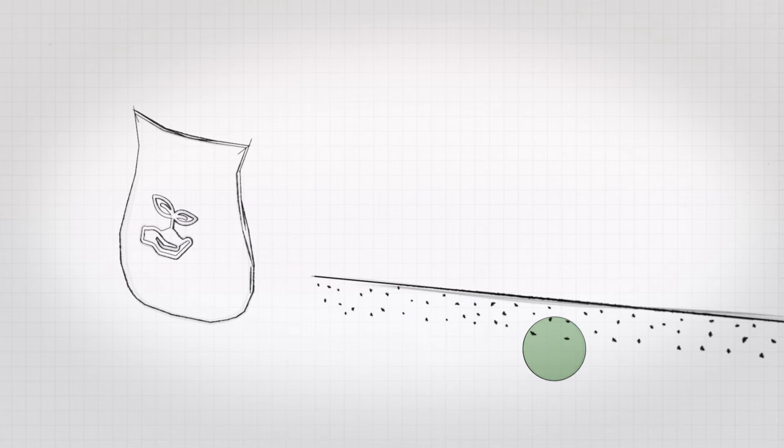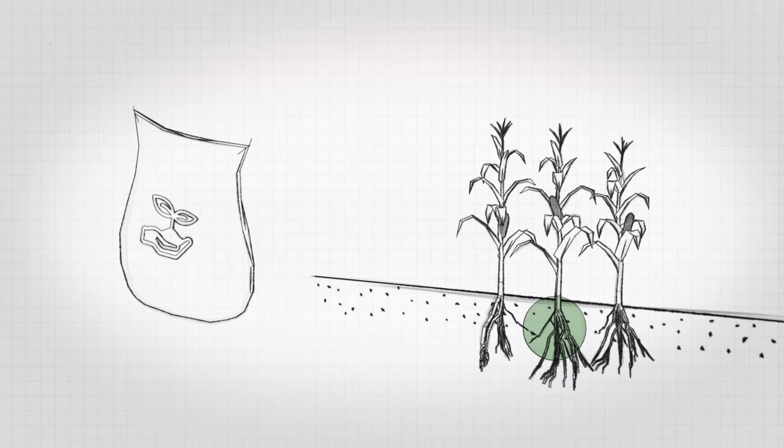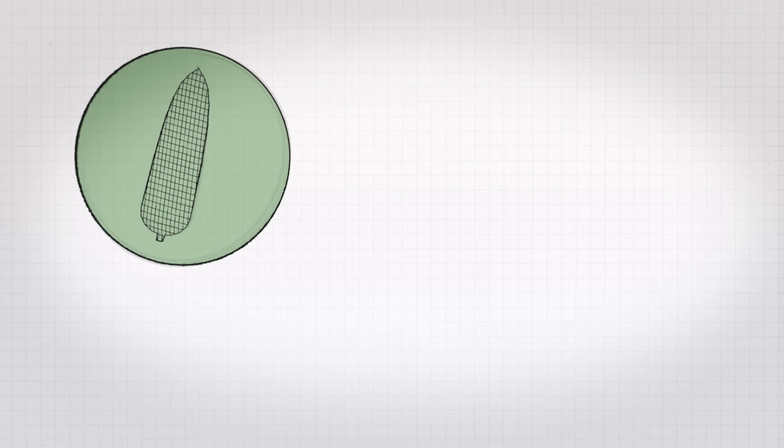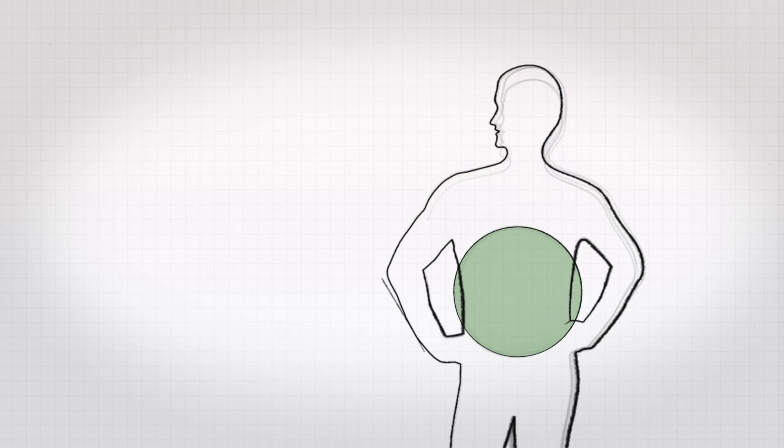Plants need nitrogen to grow, and most plants take up reactive nitrogen from the soil. Humans also need nitrogen and receive it from the food they eat. A large amount of the nitrogen we take up as food is excreted.